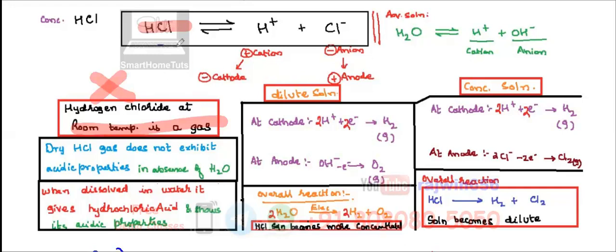Another similar example is H2S, hydrogen sulfide. This is also a gas. It is soluble in water, but the reactions are going to be different. So even for hydrogen sulfide, if water is not there, electrolysis is not possible. At this level, we are not going to cover dilute and concentrated solutions for it.